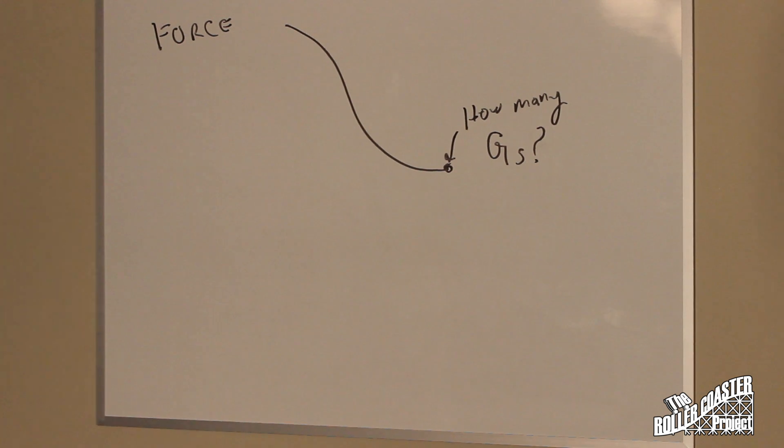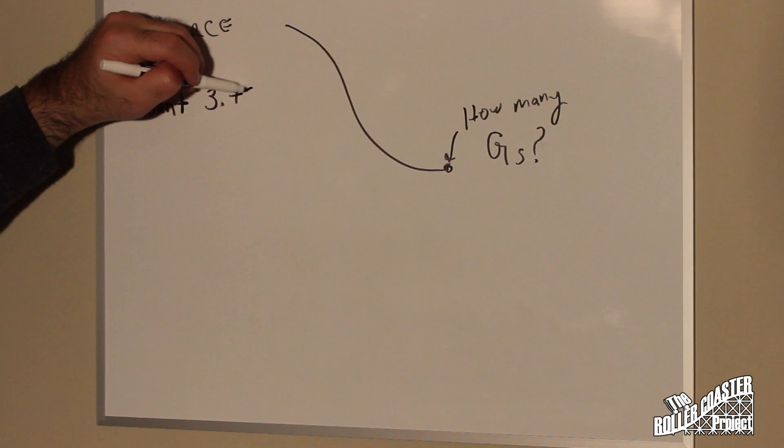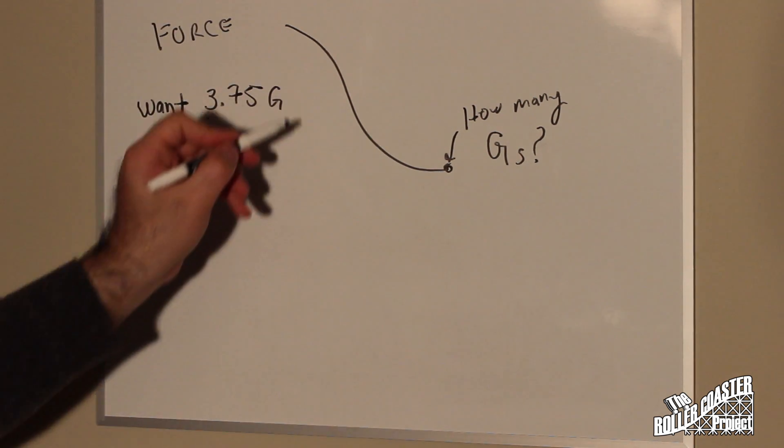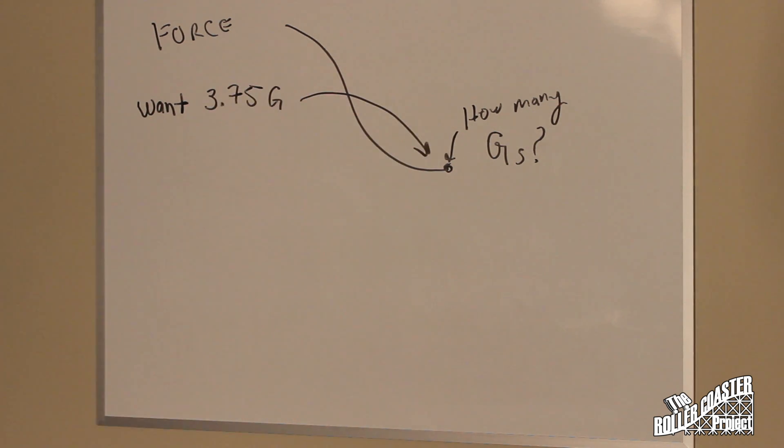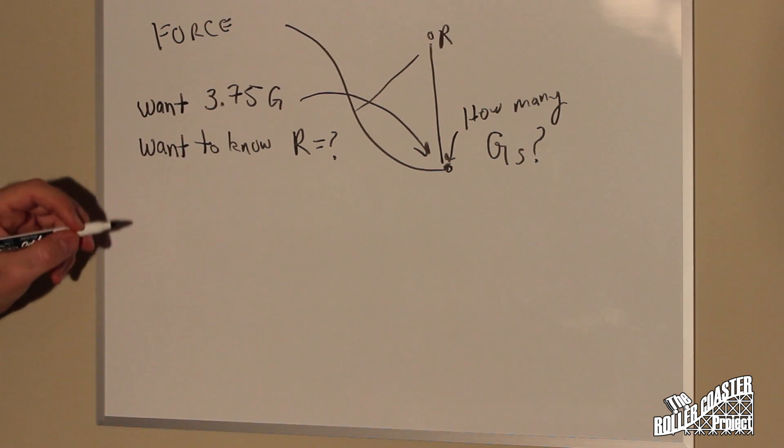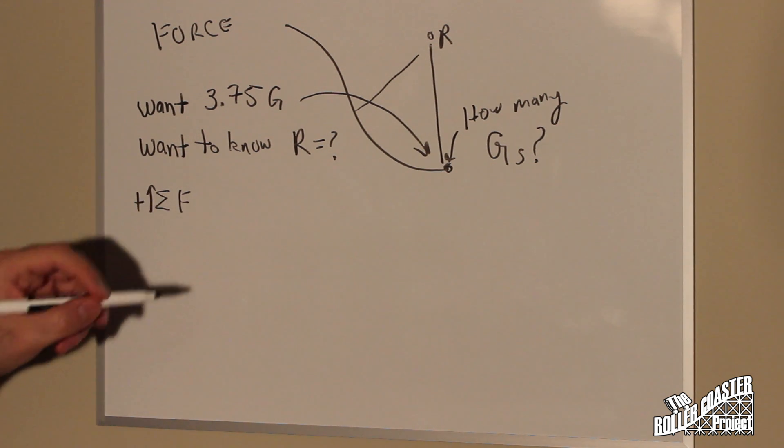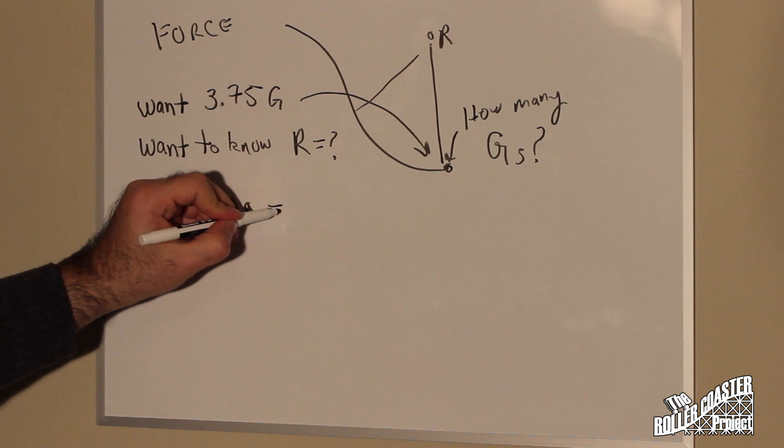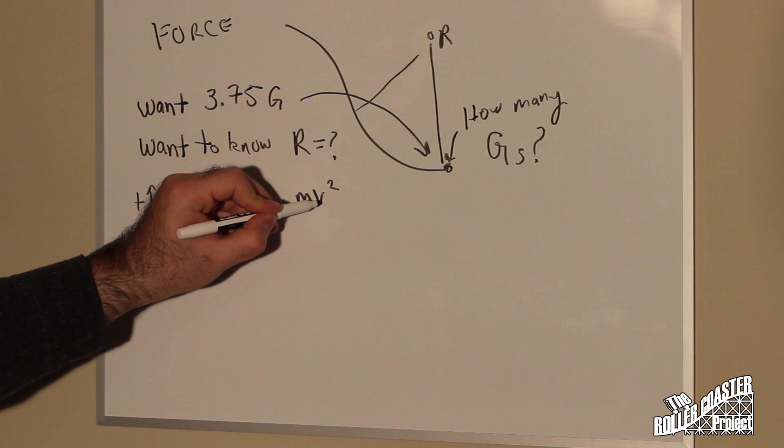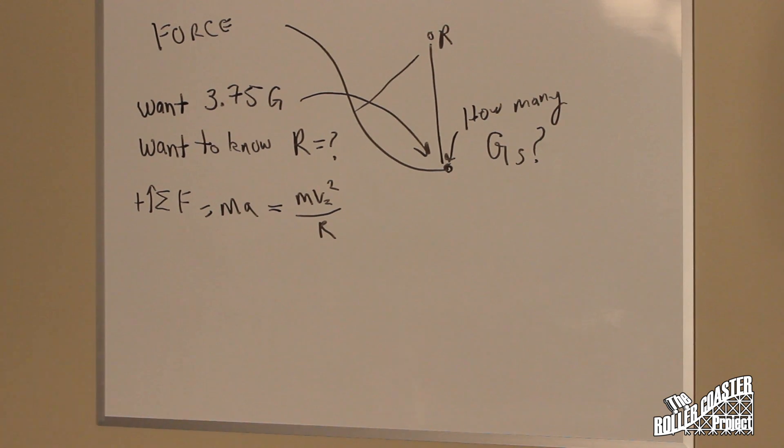If you understand how to calculate the velocities and the radii involved, to make sure that you can use G-forces to your advantage. So we want to know the R that's going to be based on our velocity from the last equation, and we want it to give us 3 and 3 quarter G. Newton's second law dictates that the sum of the forces is equal to your mass times acceleration. In this case, we're using a simple circle, which would be our centripetal force, which is mass times velocity squared over R.